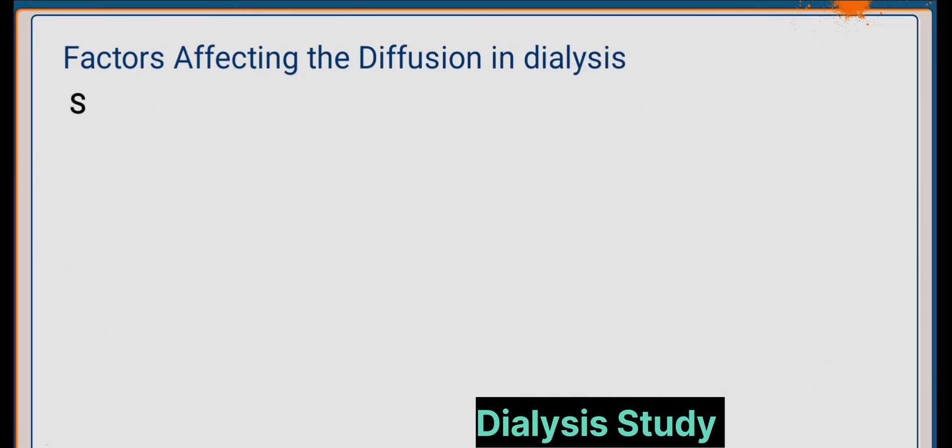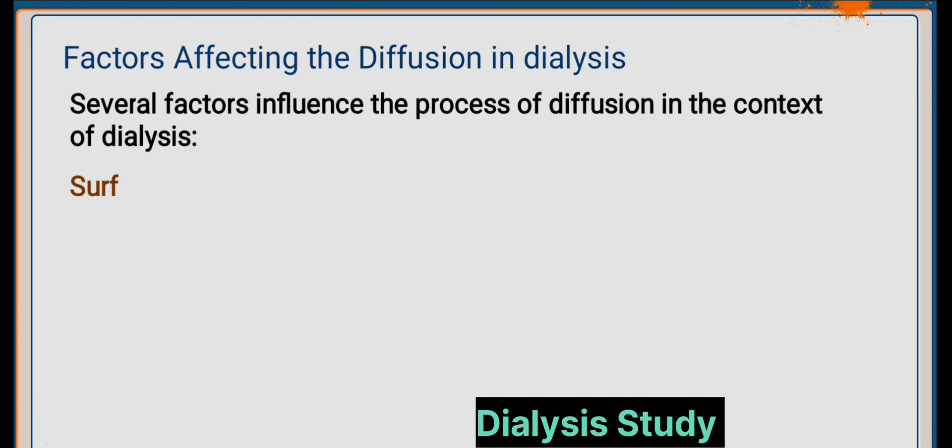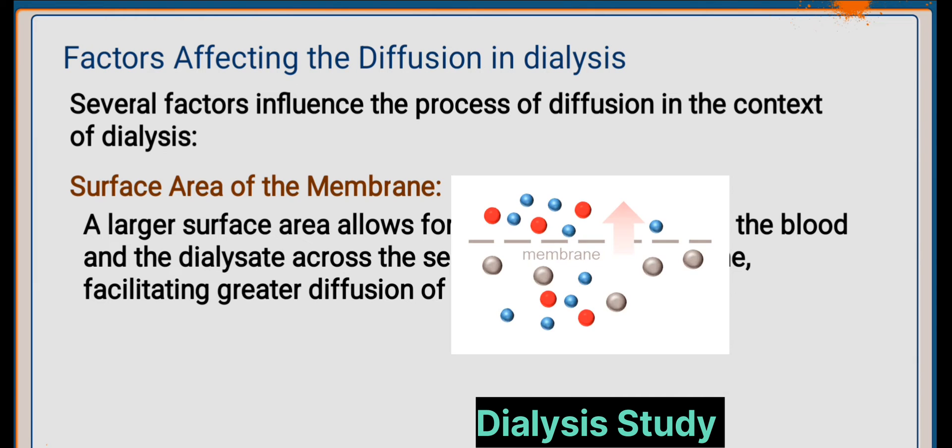How do factors affect diffusion in dialysis? There are several factors that influence the process of diffusion. First is the surface area of the membrane. A larger surface area allows for more contact between the blood and the dialysate across the semi-permeable membrane, facilitating greater diffusion of solutes.